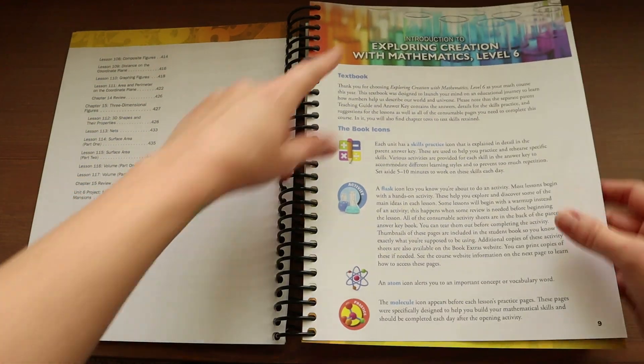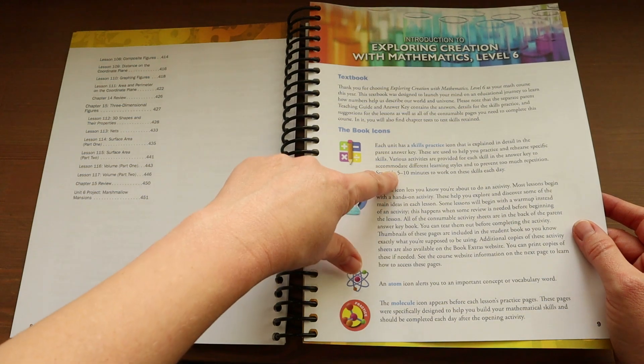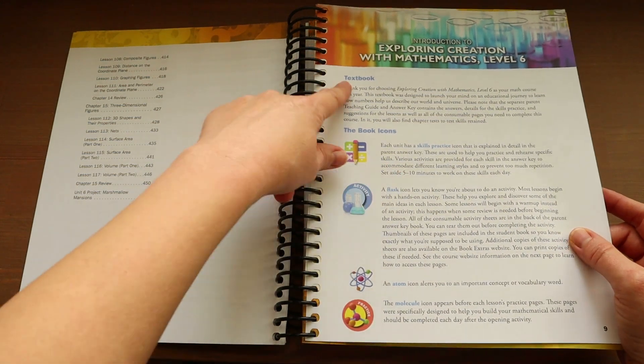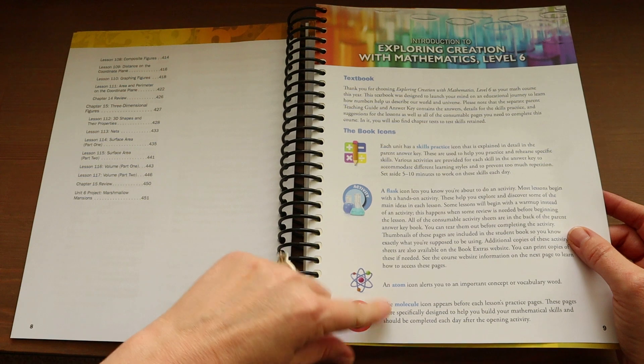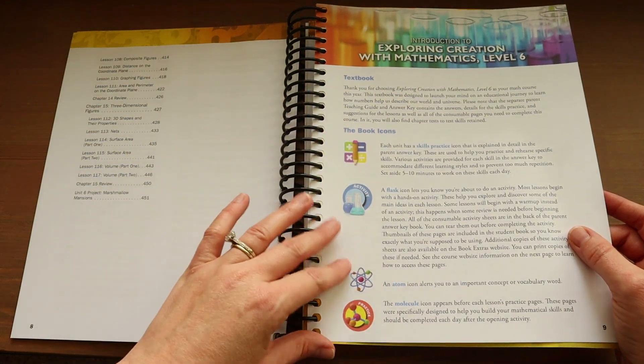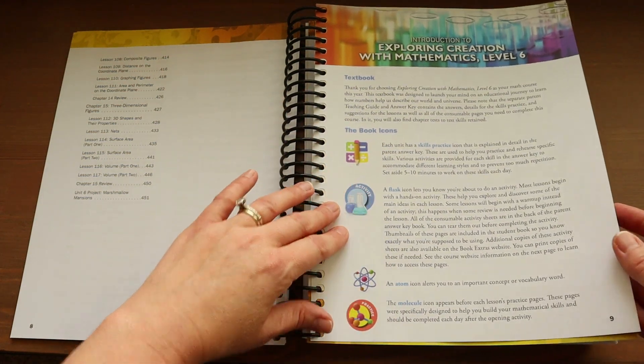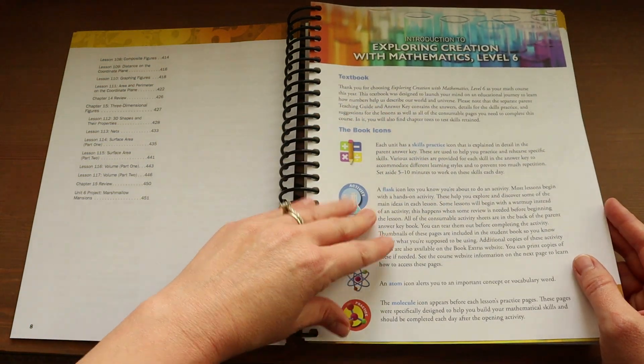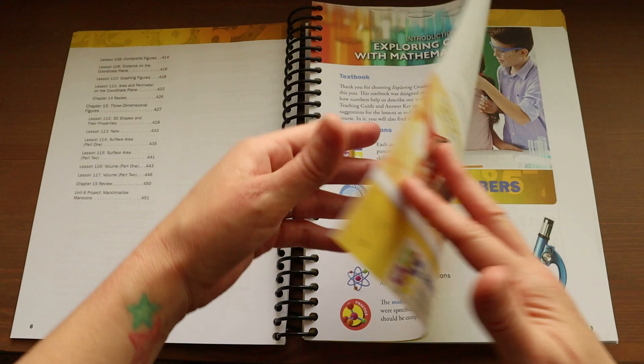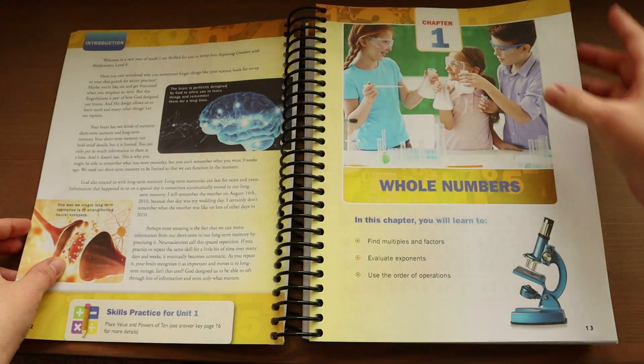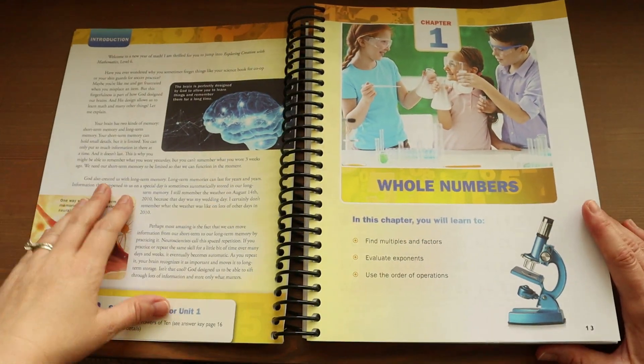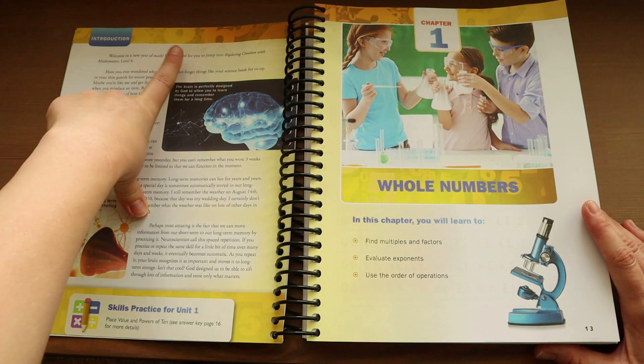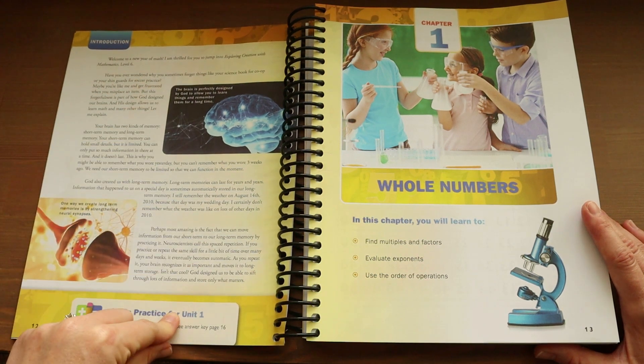Now the next page is an introduction to Exploring Creation with Mathematics Level 6. It gives you just a brief overview of some of the icons that you're going to find throughout the book and what they mean. On the next page is a password that you can use for some additional book extras. So if you feel like your child needs a little extra practice and different things like that, you're going to get an introduction to the first unit.